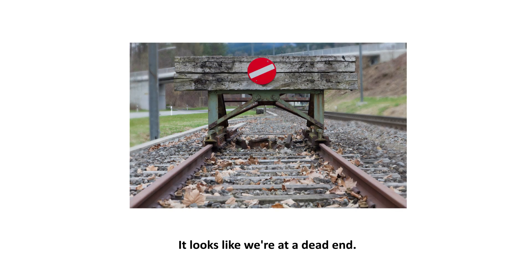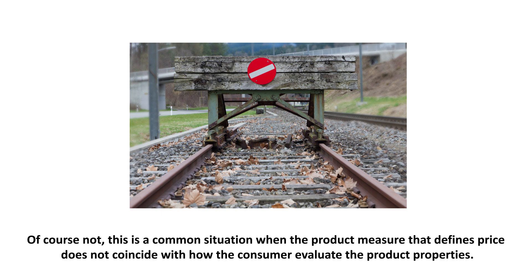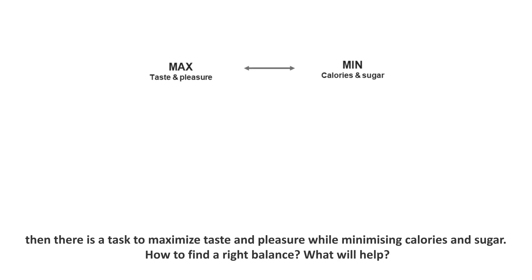It looks like we're at a dead end. But wait a moment — do we face this uncertainty just in diamonds? Of course not. This is a common situation where the product measure that defines price does not coincide with how the consumer evaluates the product's properties. Imagine a person deciding on a treat while being very conscious of calories and sugar intake. Then there is a task to maximize taste and pleasure while minimizing calories and sugar. How to find the right balance?